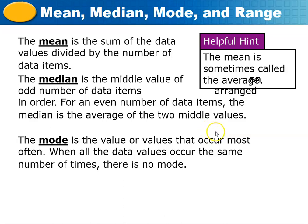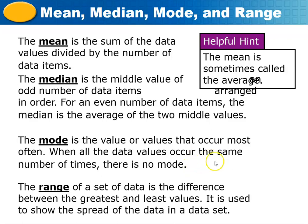The mode is the value or values that occur the most. When all data values occur the same number of times, there is no mode. The range of a data set is the difference between the greatest and the least value; it is used to show the spread of the data.